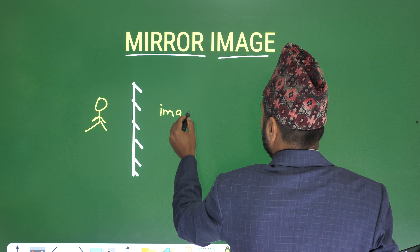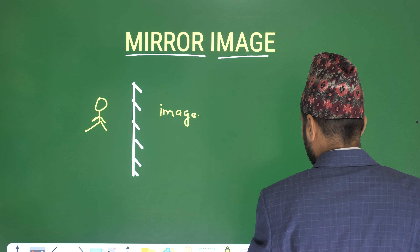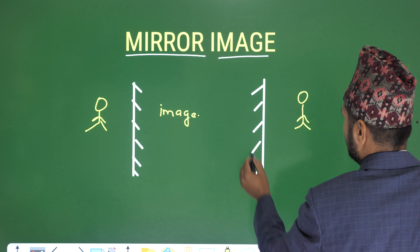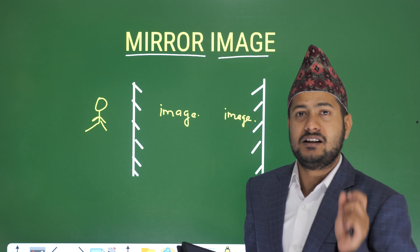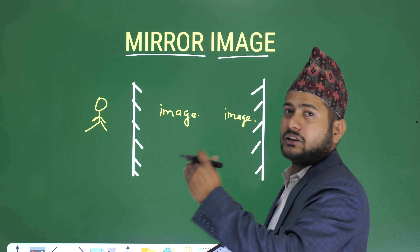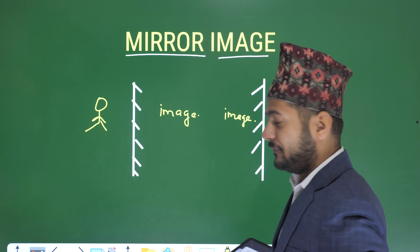The image will be shown here. The mirror will be shown here — this side will be shown on one side, and the other side on the other. The basic thing is that the mirror image will be shown here. If we go from left to right, then we will see the mirror image. Let's talk about the image distance versus object distance.